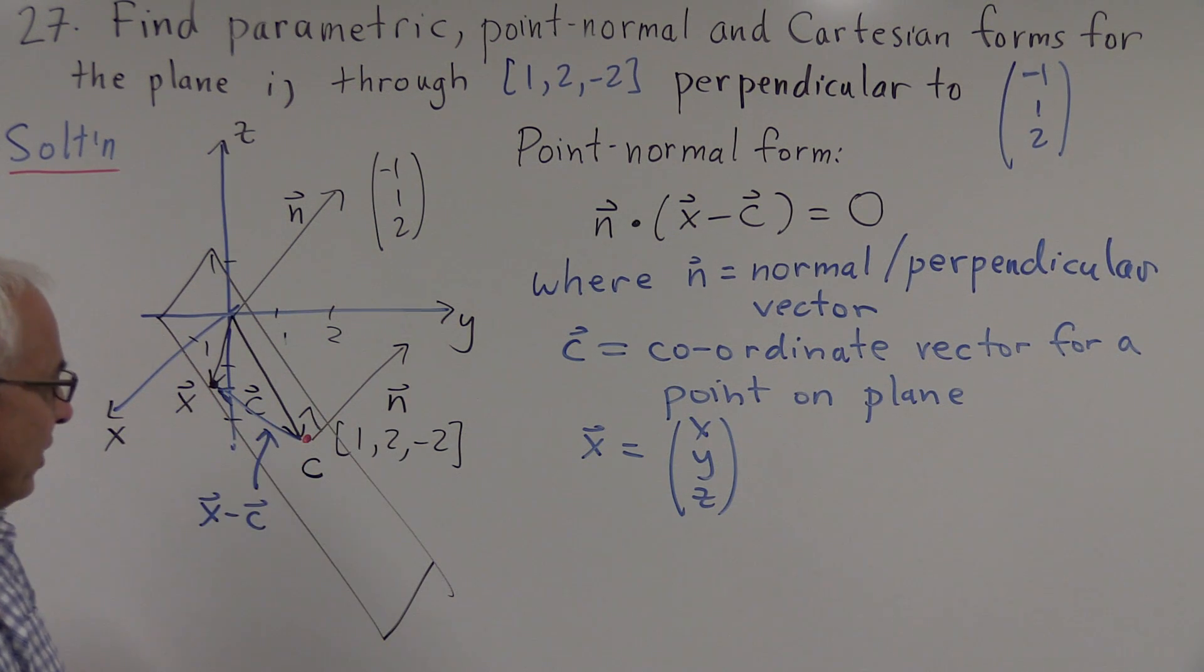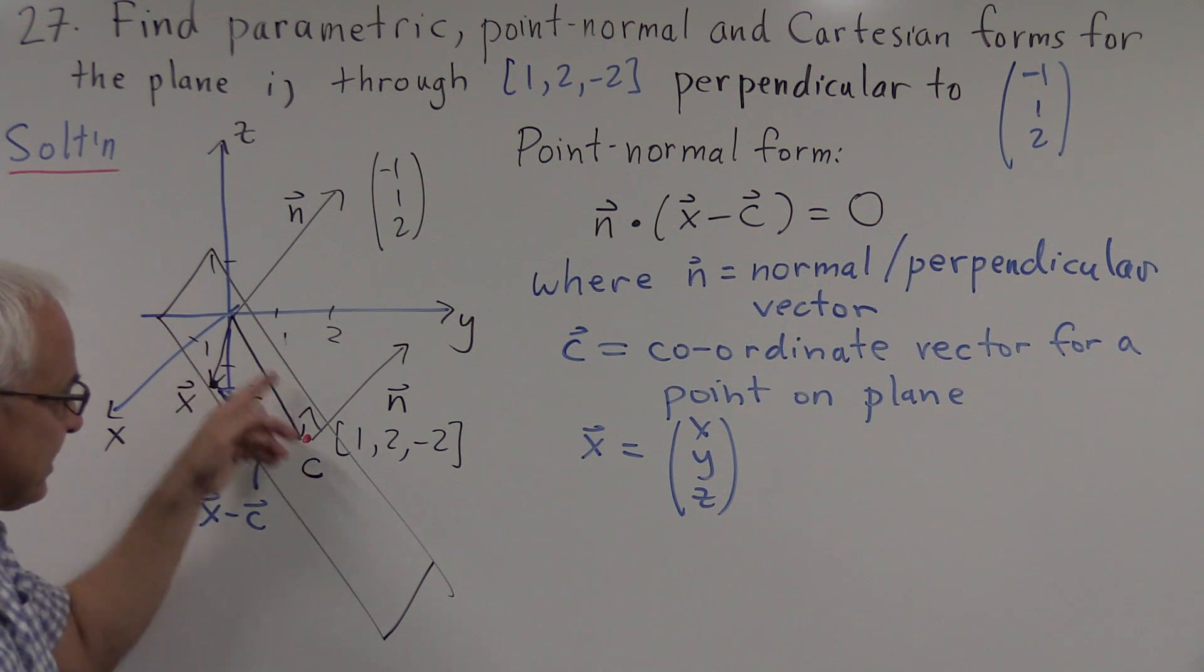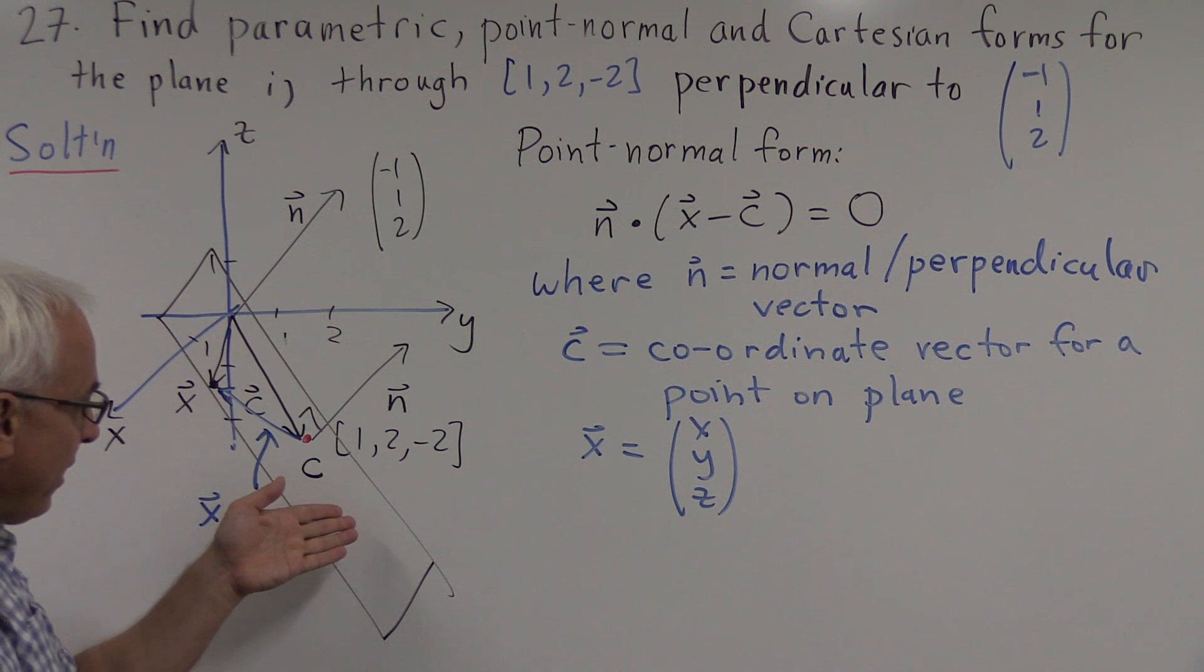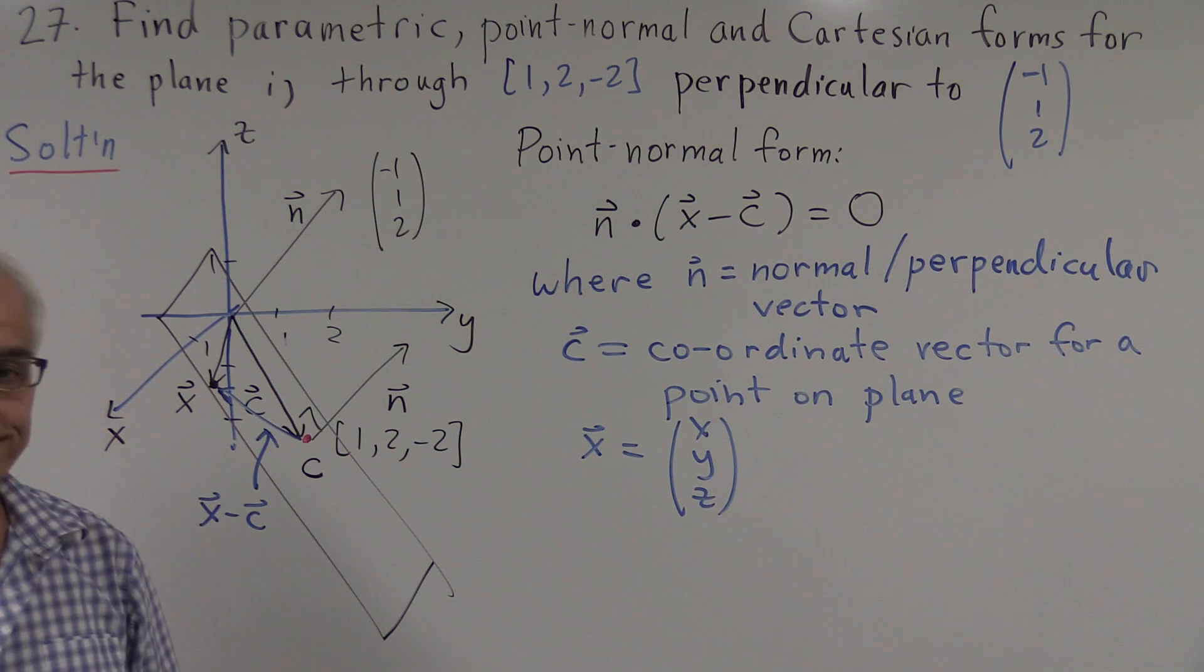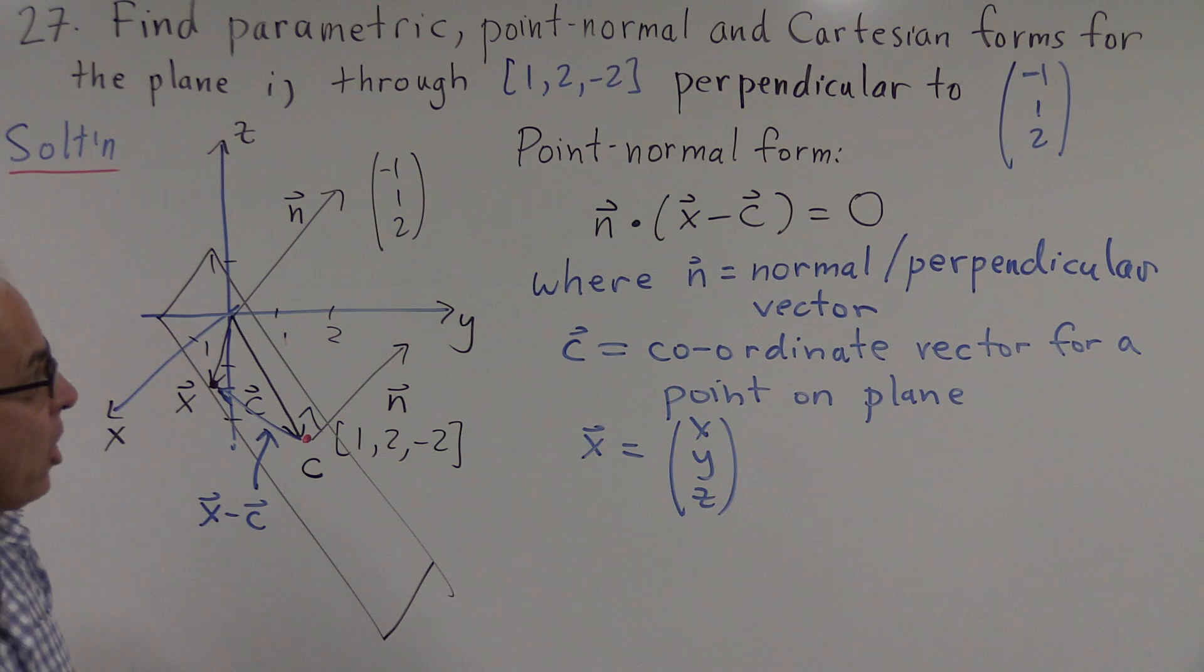And n dot that vector equals zero is the condition that those two vectors are perpendicular. So n dot this vector is zero is ensuring that this vector is perpendicular to the normal direction, which will ensure that this x stays on the plane, which is passing through c and perpendicular to n.